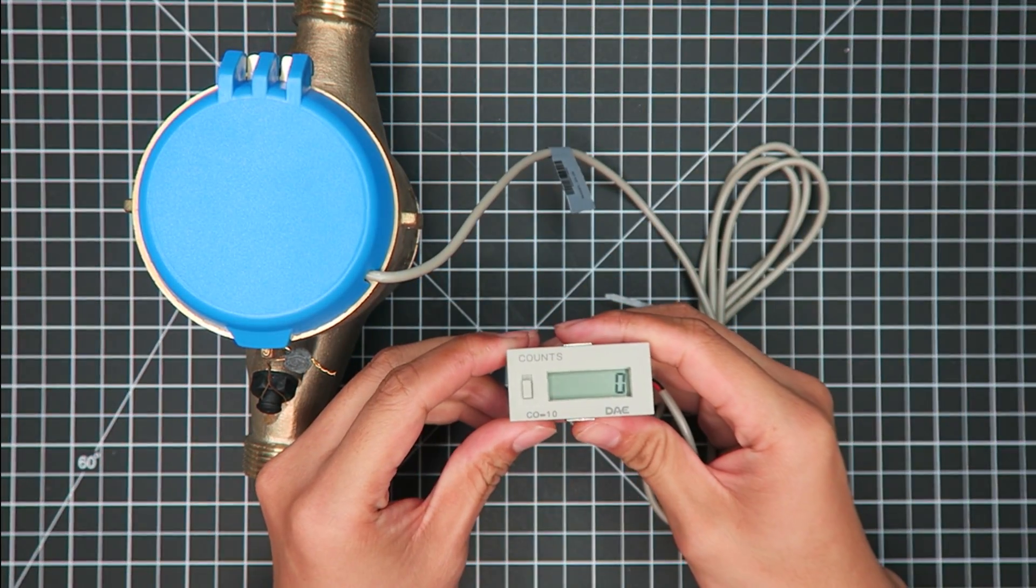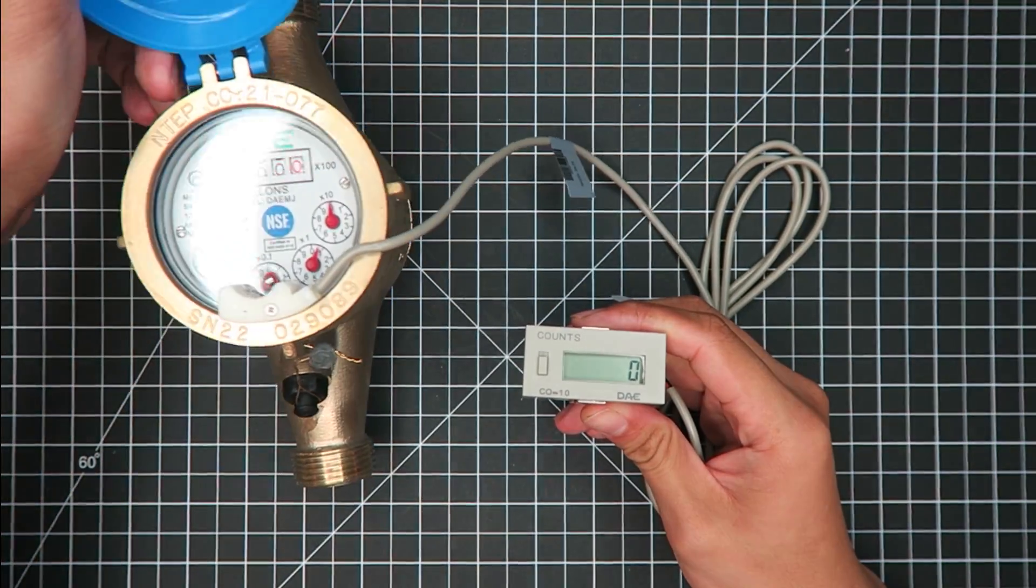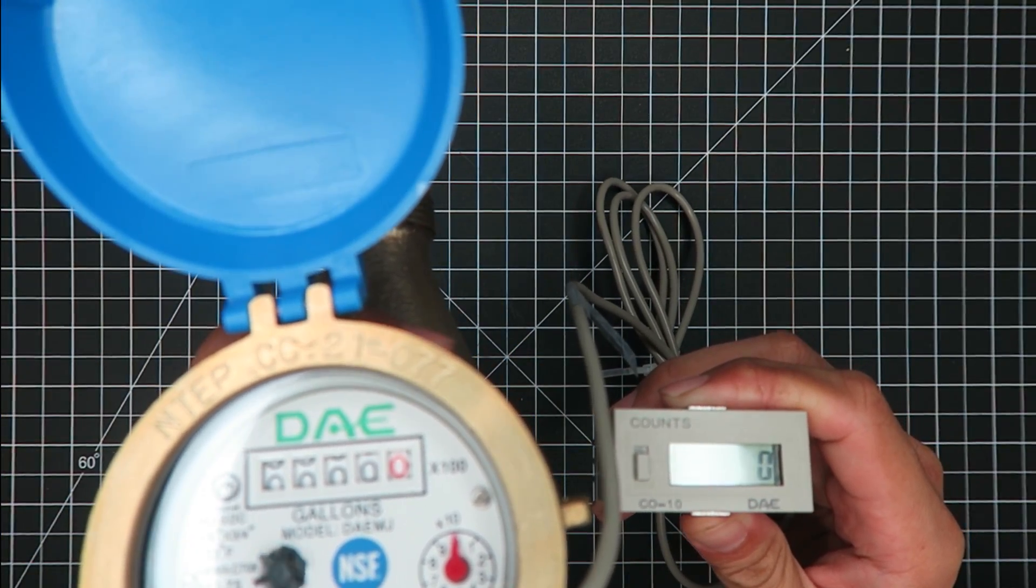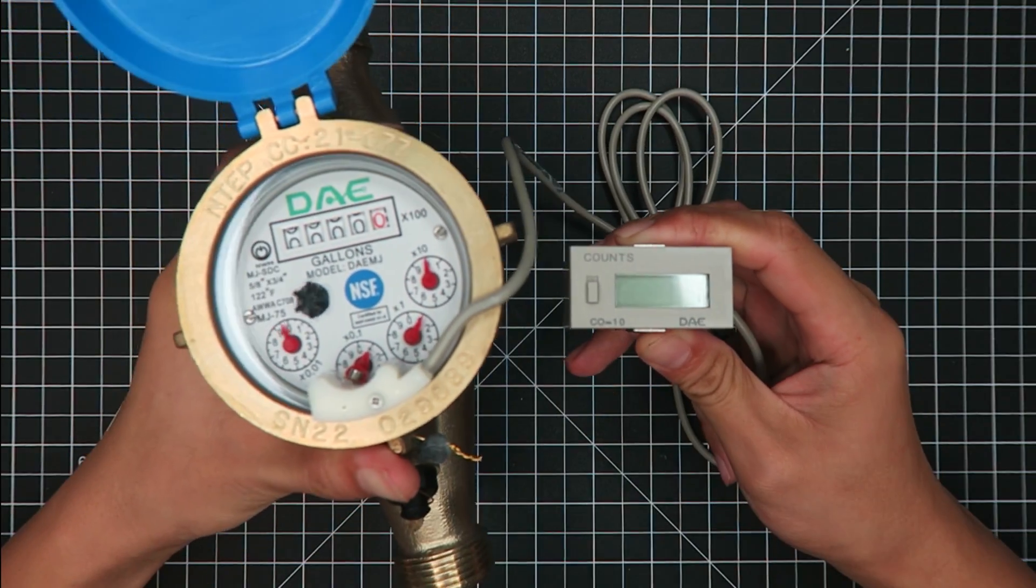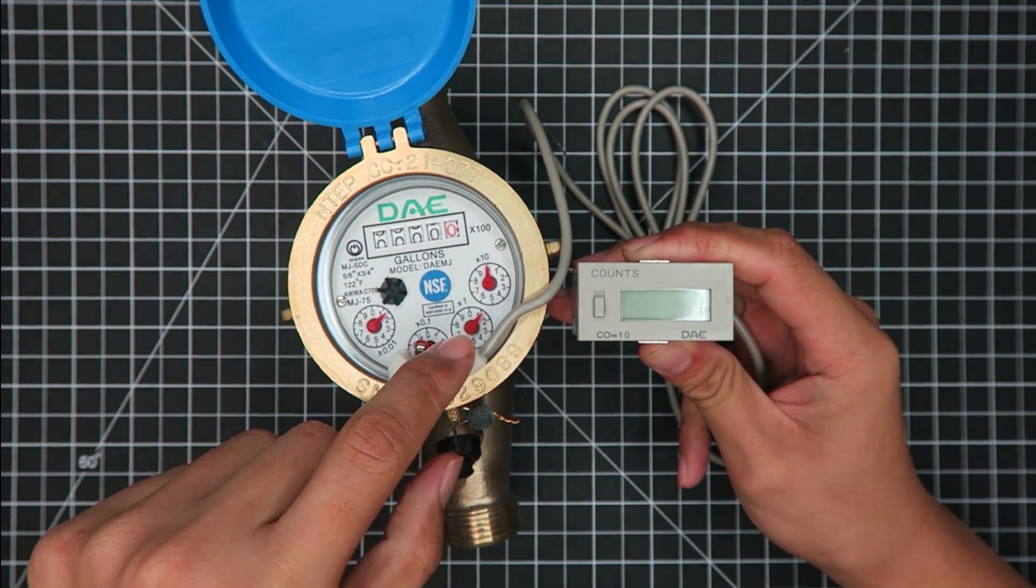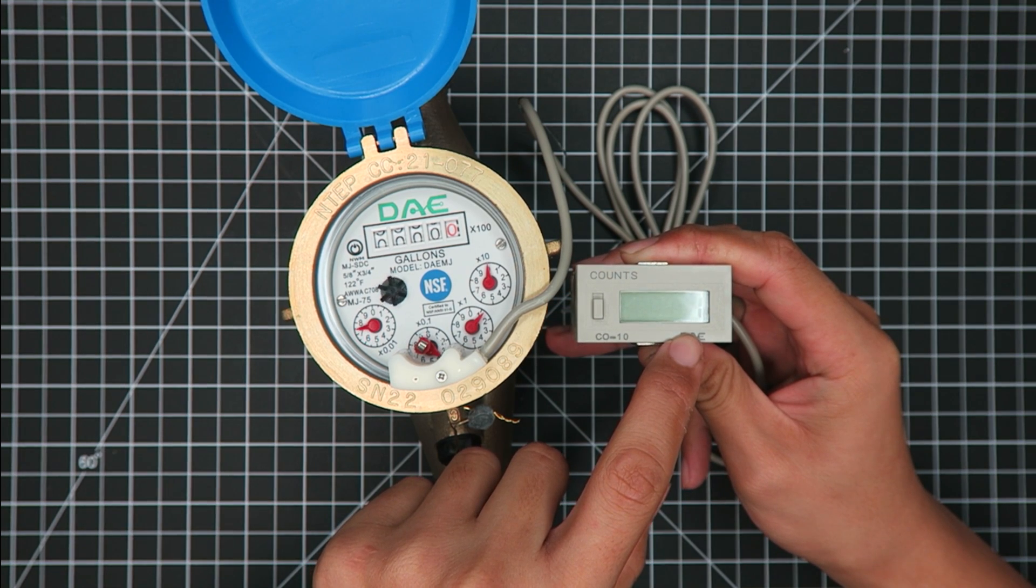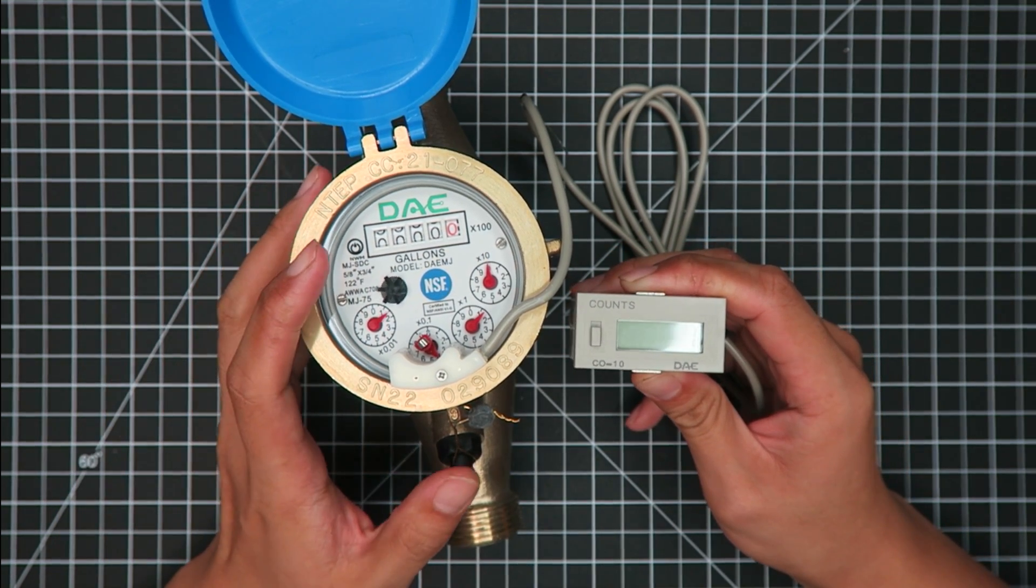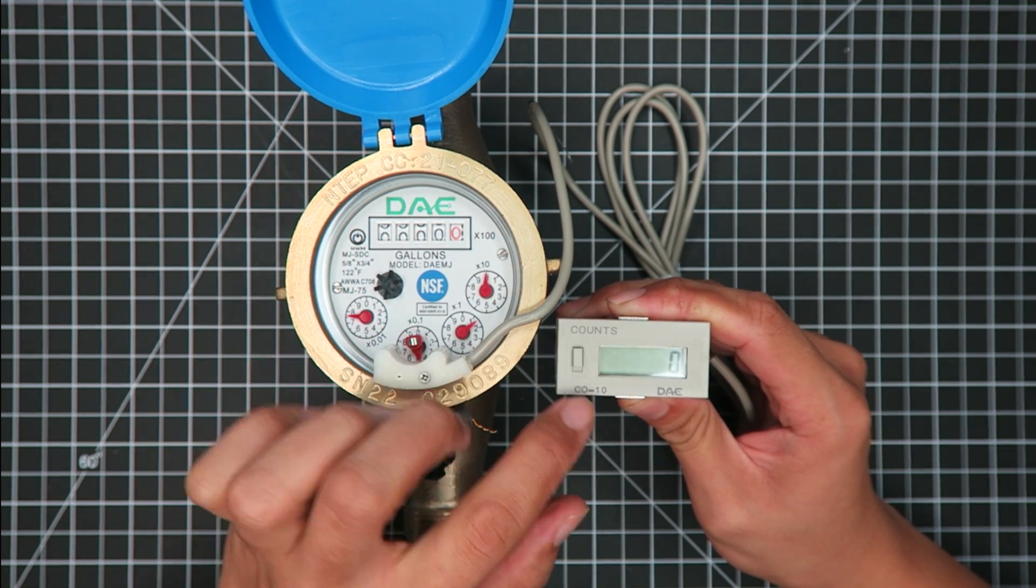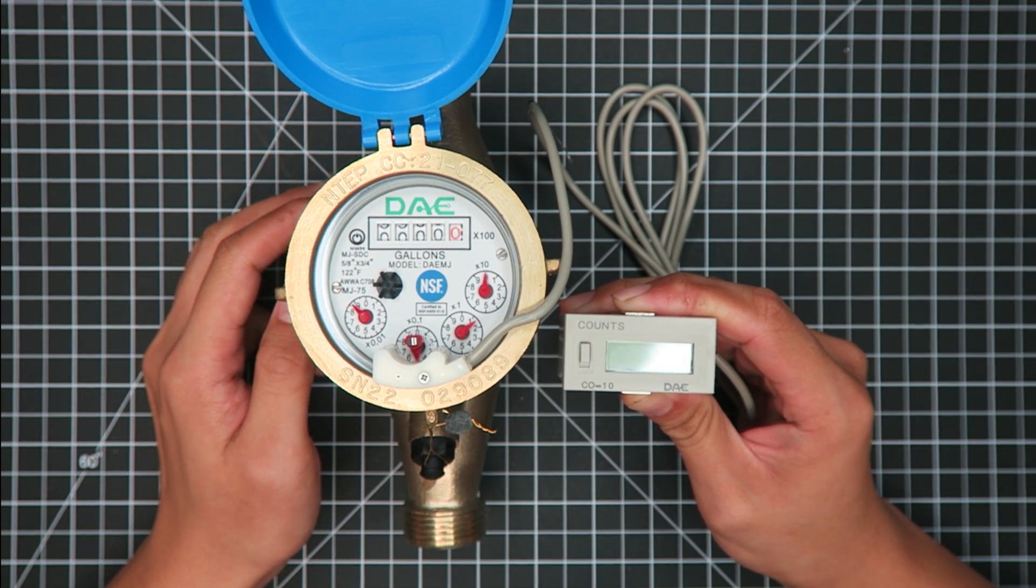And the setup is complete. So you can see here, while the water is running, the dial will turn and the counter will start counting. You can simply reset it by pushing up this button and pushing it down. You'll be able to reset this back to zero.